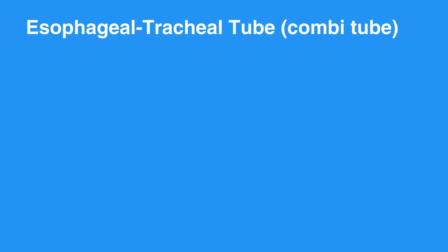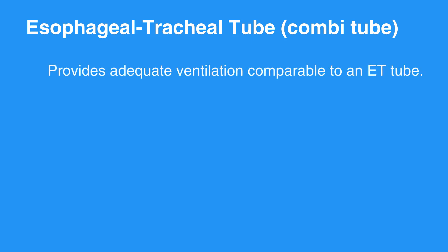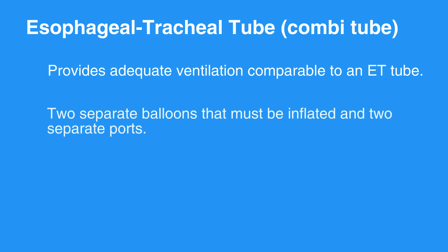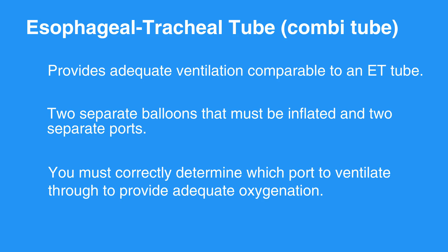The esophageal tracheal tube, sometimes referred to as a combi tube, is an advanced airway alternative to ET intubation. This device provides adequate ventilation comparable to an ET tube. The combi tube has two separate balloons that must be inflated and two separate ports. As a provider, you must correctly determine which port to ventilate through to provide adequate oxygenation.